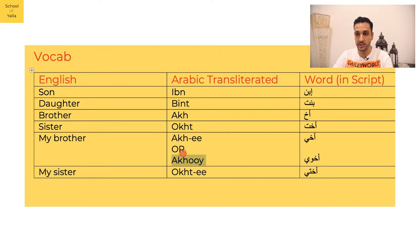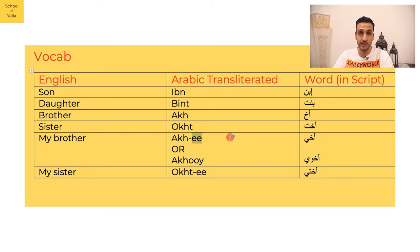For 'my brother,' you say 'akhi.' In colloquial Levantine Arabic you'll also hear 'akhuy,' and that form is used in other parts of the region as well. But looking at the standard structure — adding 'my' to 'akh' — 'akhi' works perfectly fine and is the standard way of saying 'my brother.' I'm just pointing out 'akhuy' since it's widely used too.